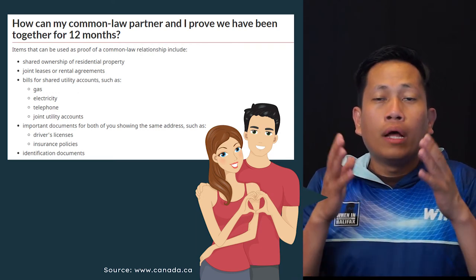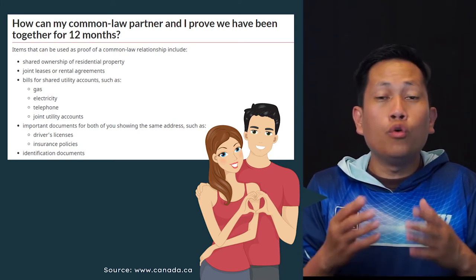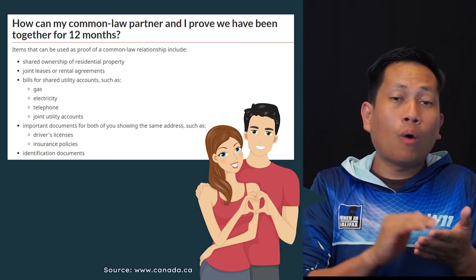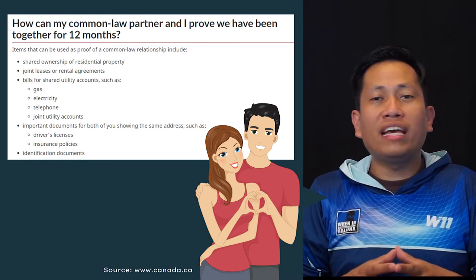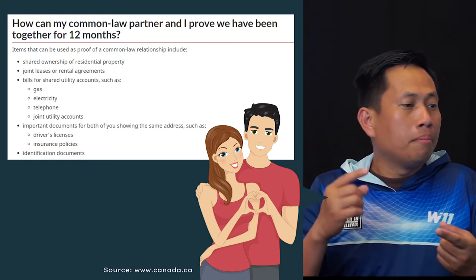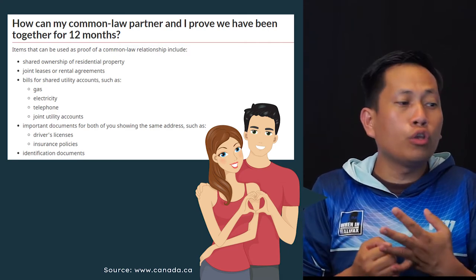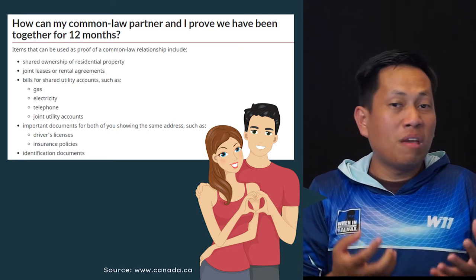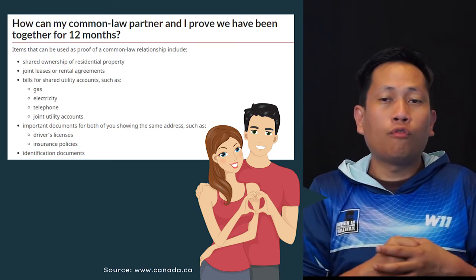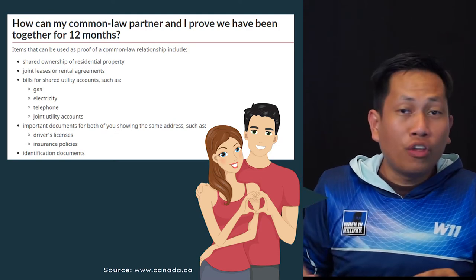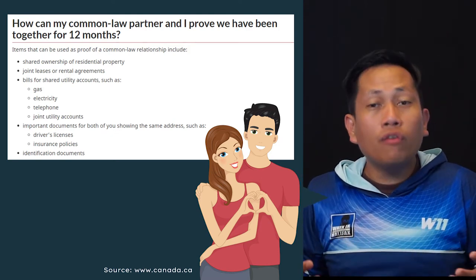So if you're renting an apartment or a condominium, you need to show that both of your names are written there. Another way to prove is through bills — gas, electricity, telephone, or any joint utility accounts. Maybe you have a phone bill; both your names should appear on those bills. Same with electricity — your name should be on it.